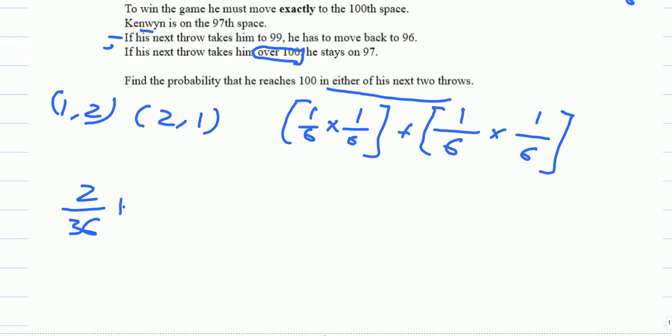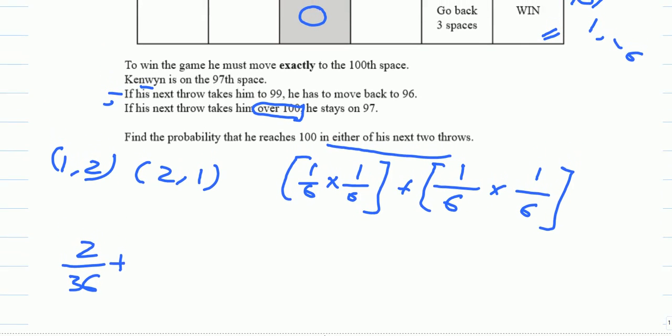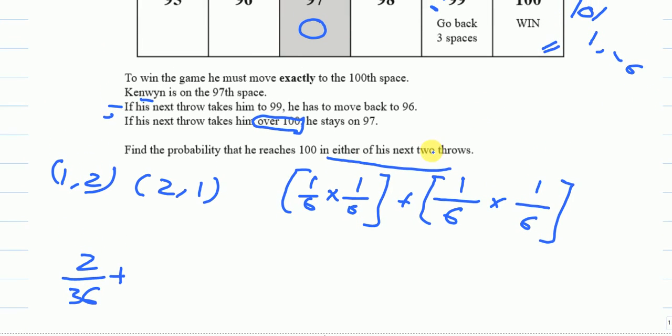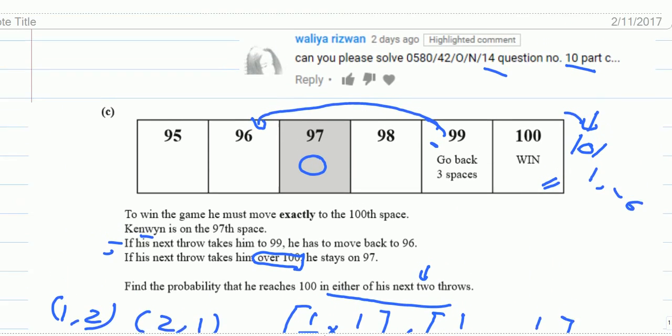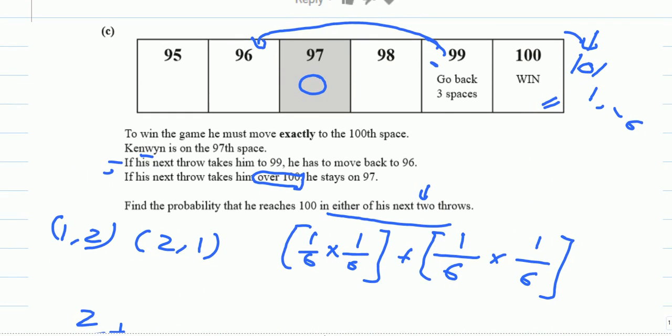So if I want to win on the first chance, but this said in either of his next 2 throws, so we can go up to 2 throws. So let me think what would be the possibility of the 2 throws. That's why they give us these 2 routes for the 2 throws. So let me start with the first one.